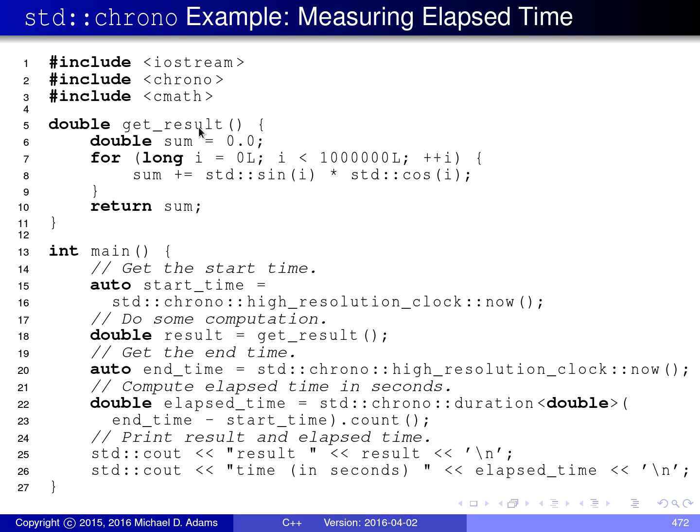Then in this code example, I have a function called get_result. What this function is actually computing is really not that important. The main point is that it's something that takes a fair amount of time. Basically, what we want to do is measure how much time this function get_result takes to execute.